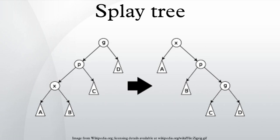Zig-zag step. This step is done when P is not the root and X is a right child and P is a left child or vice versa. The tree is rotated on the edge between P and X, and then rotated on the resulting edge between X and G.